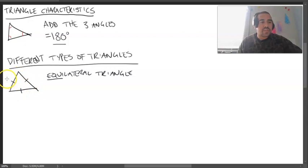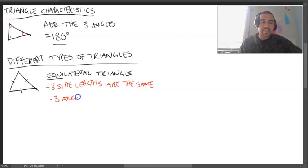So say for instance, this might be three centimeters. Equilateral triangle is, that means that because there's a dash here, that has to be three. And that has to be three. So our equilateral triangle, three side lengths are the same. And also the three angles are also the same, the three angles, they're equal.